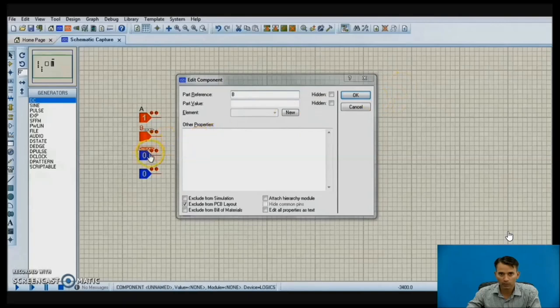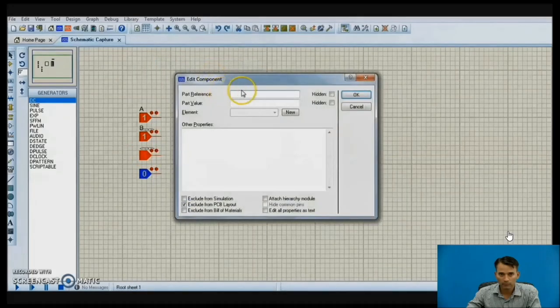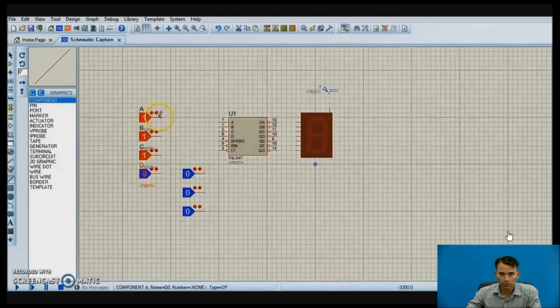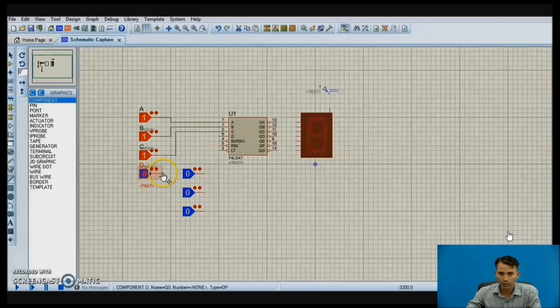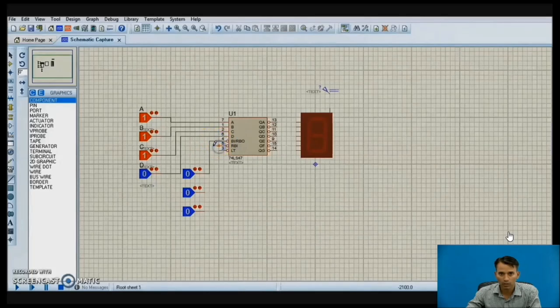Going into the edit component, we can give the name here. Now let us make connections. Choosing a wire, we can make the connections. We are connecting ABCD to the ABCD of the driver IC 7447. It is very easy to simulate a circuit through Proteus software because we have schematic of each and every component in this software. Then let us connect these control inputs to the RBI, RBO, and LT.